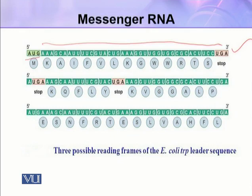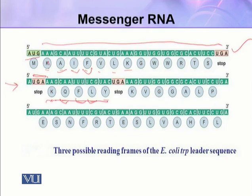In the first reading frame, the amino acids added are A, I, F, V, L — these are distinct. In the second case, if reading starts differently, UGA would be a stop codon, so reading resumes producing amino acids K, Q, F, L, Y. Comparing the two: both share K initially, but then differ — A vs Q, I vs F, and so on. The proteins produced have different amino acid sequences and even different sizes.